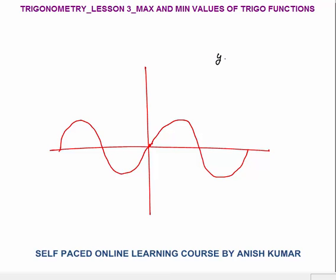First I will discuss y = sin x. Here y is the output values and x is the input values. The domain means the set of input values we can put. We can put any values of x, so the domain would be ℝ, or from minus infinity to infinity. This means sin is defined for each and every real number.